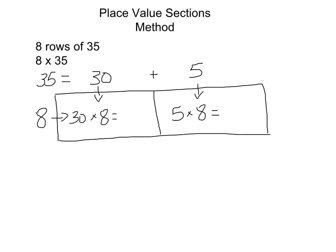So we're breaking this into two easier problems. Now if we look at 30 groups of 8, we can take that 30 and turn it into 3 times 10 times 8, and the fastest way to do that is 3 times 8 is 24, and 24 times 10 is 240. That's what we've been working on earlier to prepare us for this.